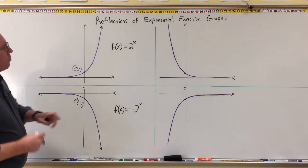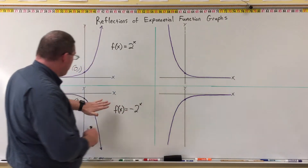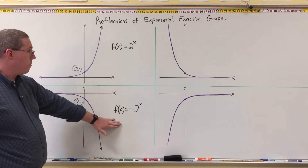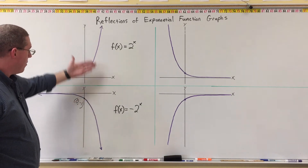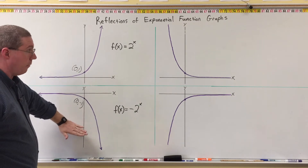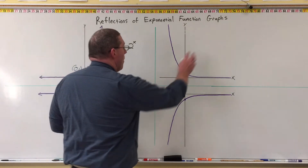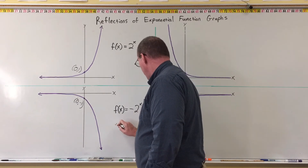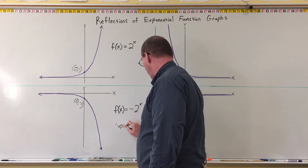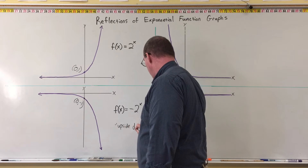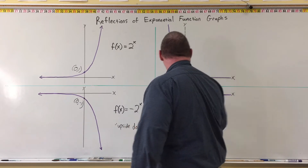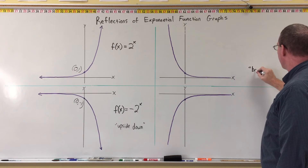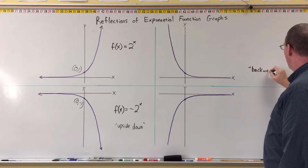I call this one — the negative in front — "upside down." This is the normal graph, and this is the same graph but upside down. The other type of reflection I call "backwards."